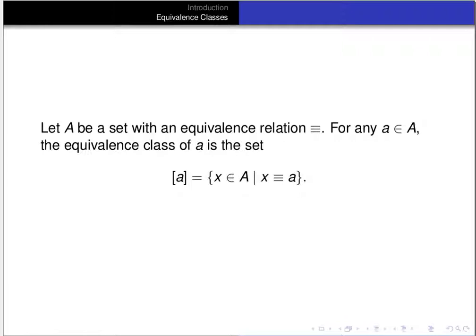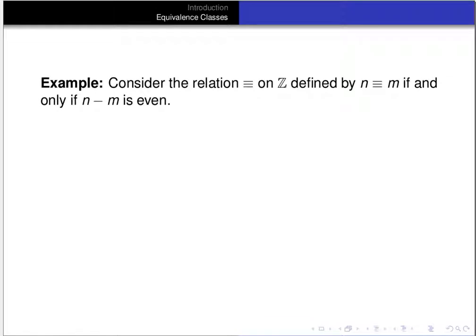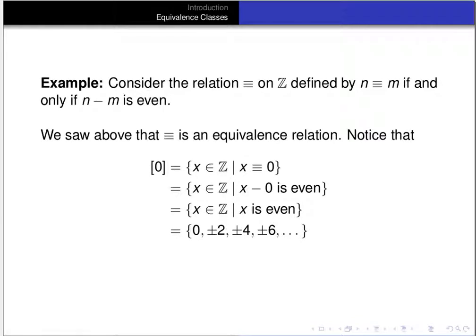Equivalence classes have some very nice properties. Let's talk about this equivalence relation we've seen before, where we define a relation on the integers by: N is related to M if and only if N minus M is even. The equivalence class of 0 is the set of all integers related to 0, meaning X minus 0 is even — that just means X is even. So the equivalence class of 0 consists of all the even integers: 0, ±2, ±4, ±6, and so on.